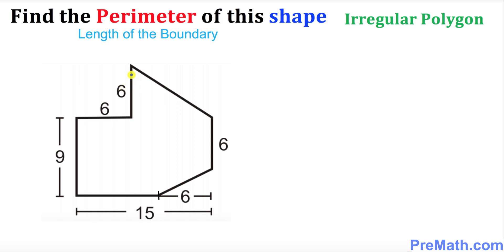Look at this individual side, which is six units. You can see that this individual side is six units as well. This is nine units, and this side you can easily figure out — the total is 15, take away six, which is simply nine units. And this side is six units.